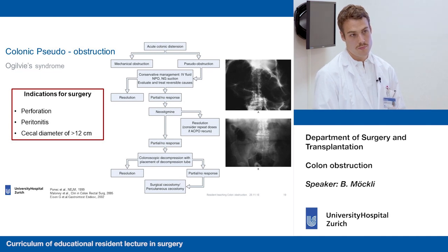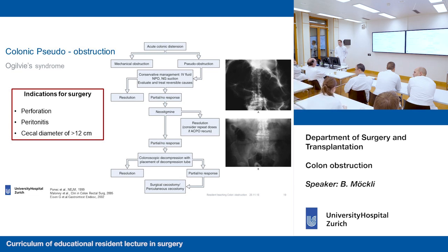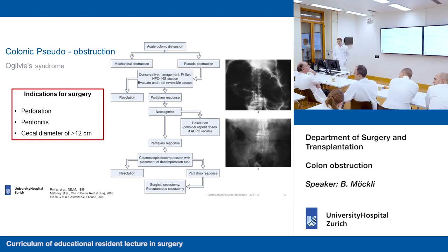There are also some nice examples where stent placement resolved the problem and an operation in an elective setting could be performed. You showed for pseudo-obstruction that a diameter bigger than 12 centimeters is an indication to resect — but is there a cutoff until when you can do the decompression? To be honest, no — there is no such limit. There's also no strict limit for resection at 12 centimeters — that's kind of arbitrary. This is mainly a clinical decision: when to do colonoscopy, when to attempt decompression, when to go straight to the OR — it has to be decided at the patient's bedside.